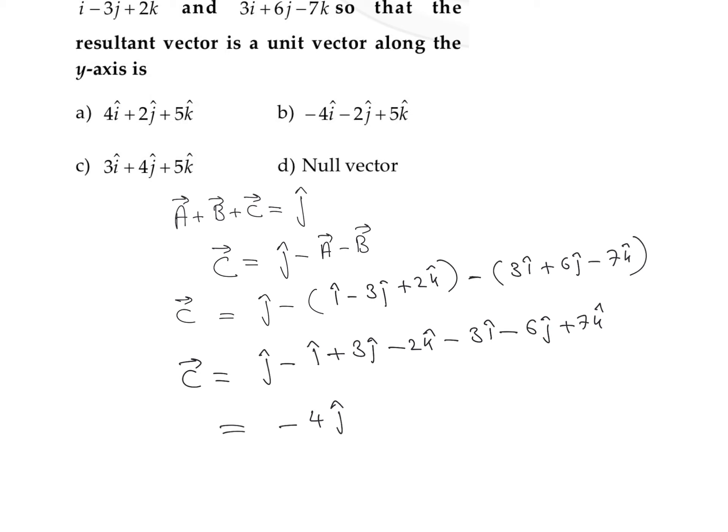That is 1j cap and plus 3j cap is going to be 4j cap. 4j cap minus 6j cap, that is minus 2j cap.